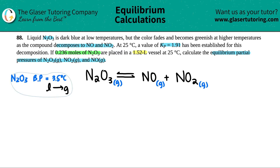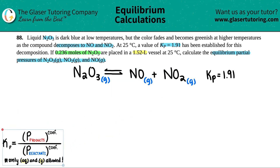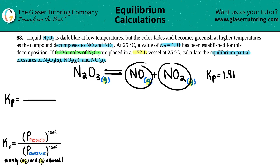Now, since we have this balanced equation, I'm just going to verify it looks balanced — and it does. They give me the Kp value of 1.91. Let's write the Kp expression. The general Kp expression is the pressure of the products divided by the pressure of the reactants at equilibrium, and only aqueous and gases are allowed. Since we know that all three species are gases, all of them are going to be in the Kp expression.